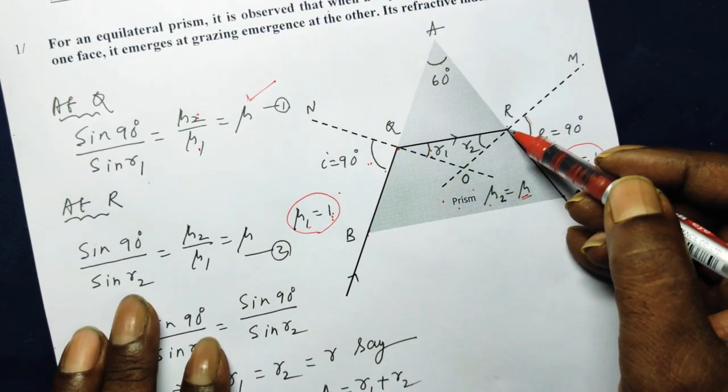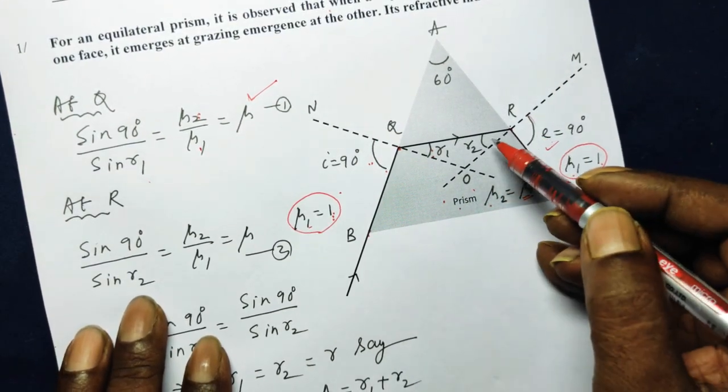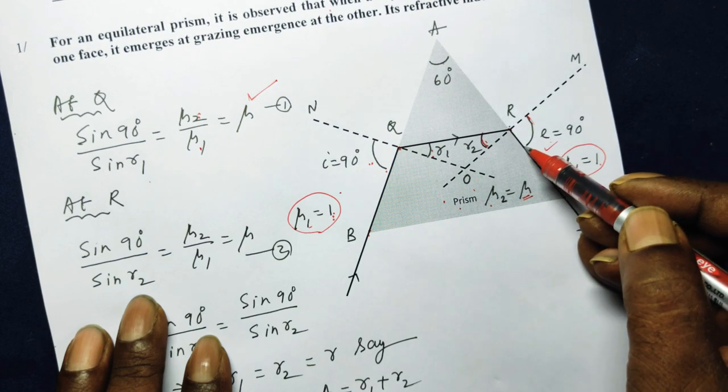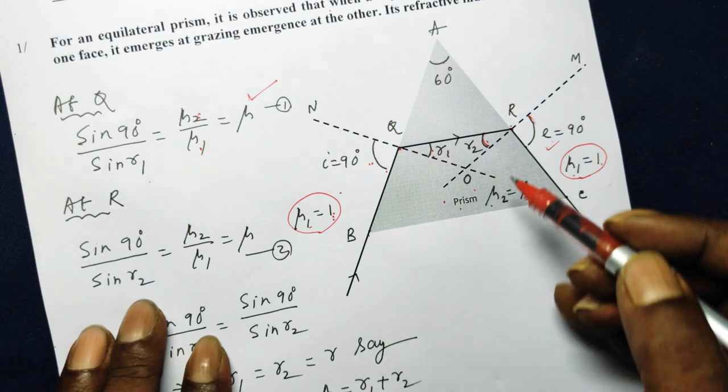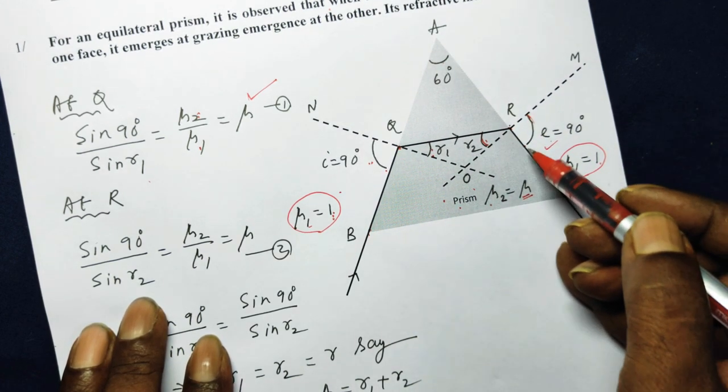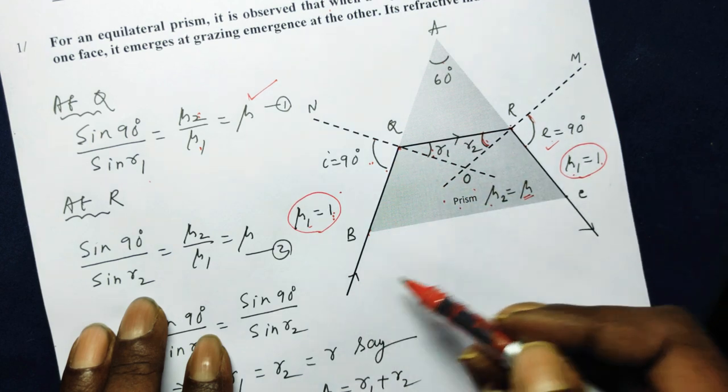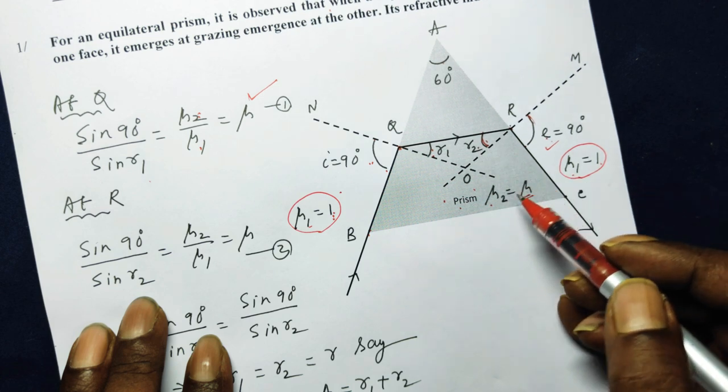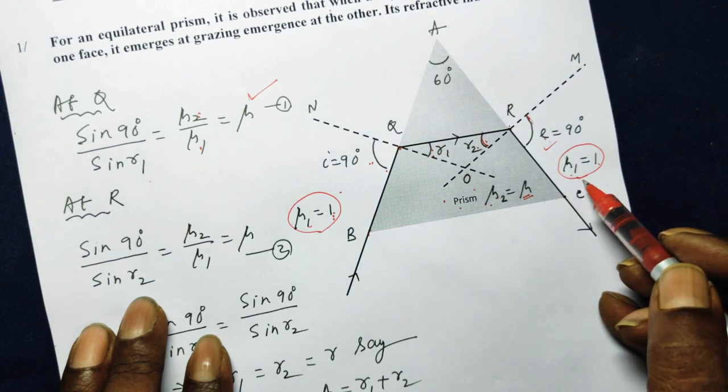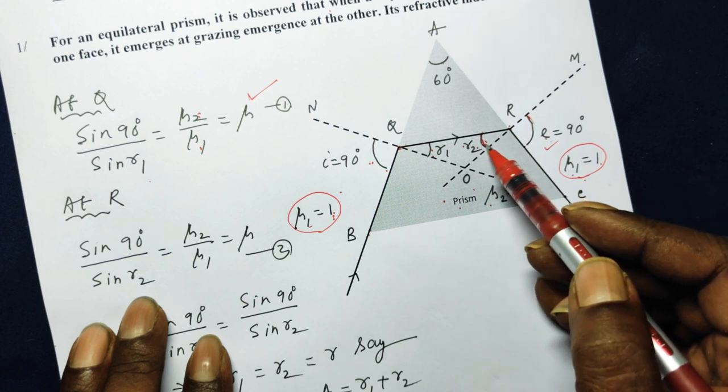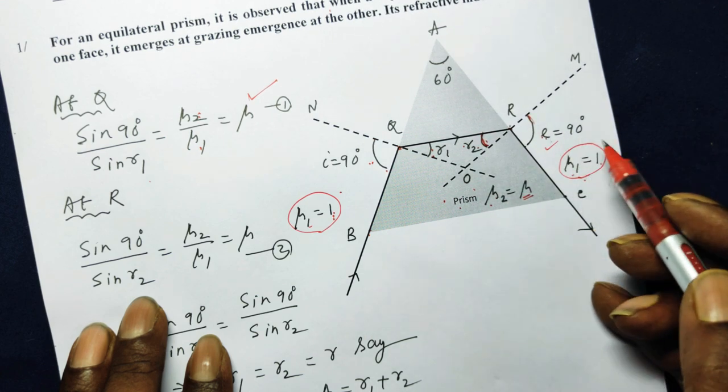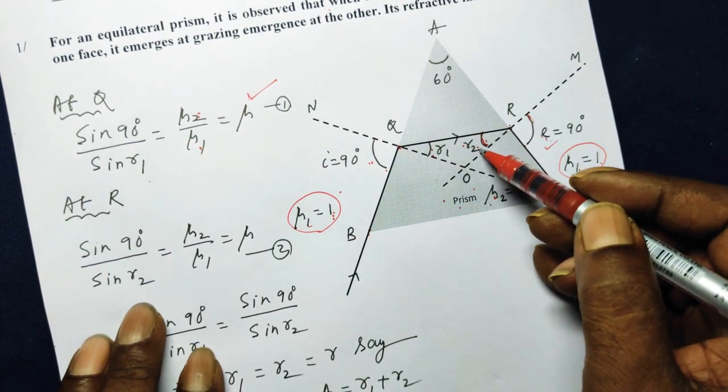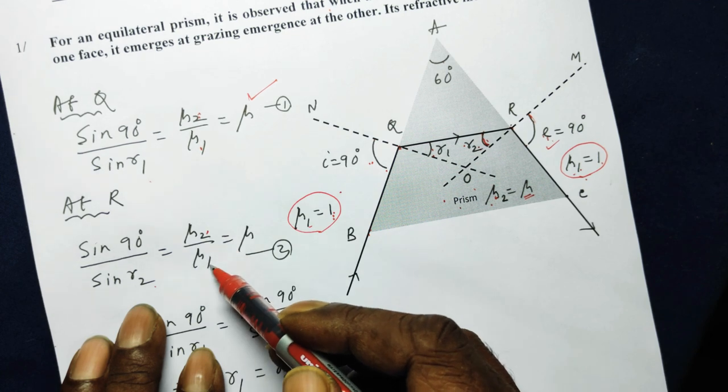Then let us come back to the point R. Here, within the glass medium, this is the angle of incidence, therefore this is the angle of refraction. So here also I am applying, if you come from this side, taking the reversibility of light, then sin 90 over sin R2 will be mu2 over mu1. If you watch from this side, sin R2 over sin 90 will be mu1 over mu2. Both ways, it is correct. So sin 90 over sin R2 is equal to mu2 over mu1, that is mu.